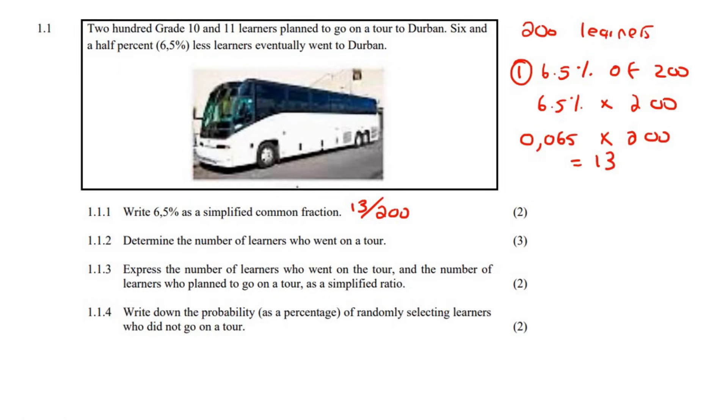Now, those are the people, are they the people that did go on the tour, or are they the people who cancelled? They are the people who cancelled. It says 6.5 percent less learners eventually went. So these people could not make it. So how many people actually went on tour? You could say 200, take away 13, and that would be 187 learners.